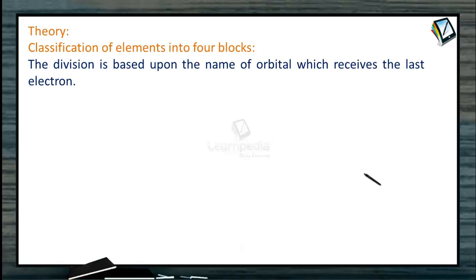The classification of elements into the blocks is purely based on the differentiating electron. The electron enters either the S orbital, P orbital, D orbital, or F orbital of the element. Depending upon the orbital occupied by the differentiating electron, these elements are classified into four blocks.